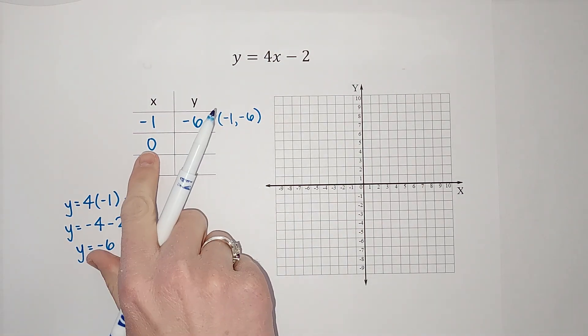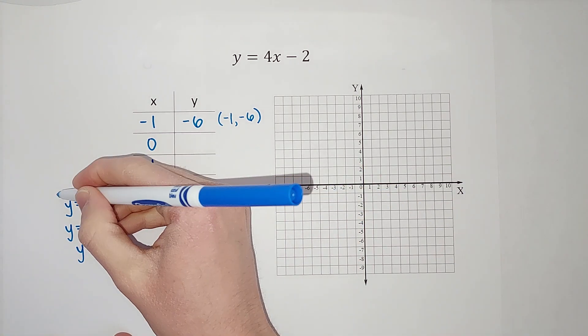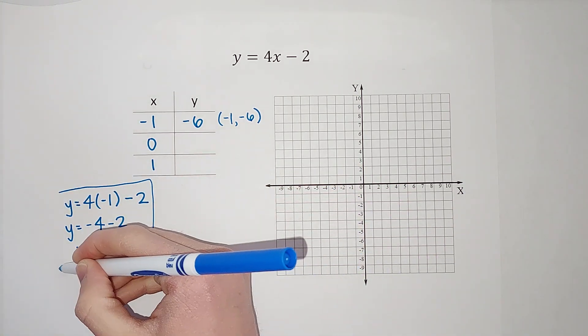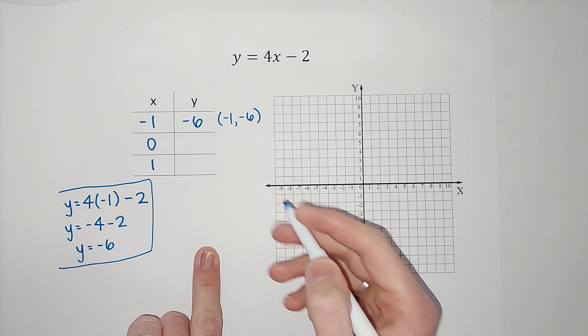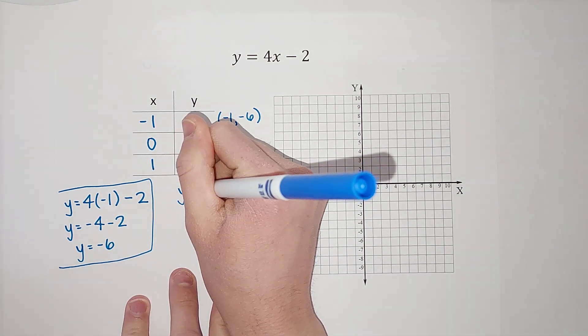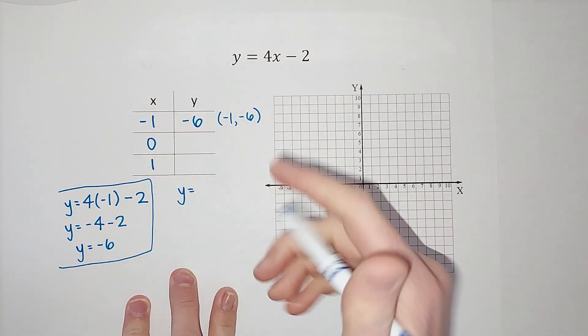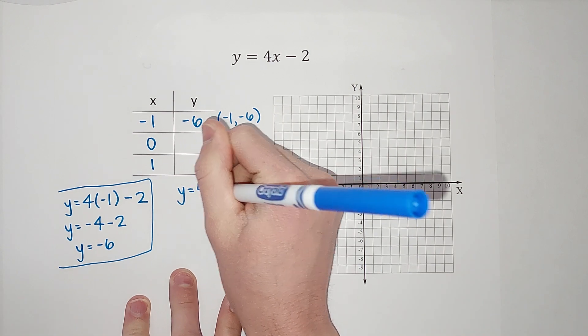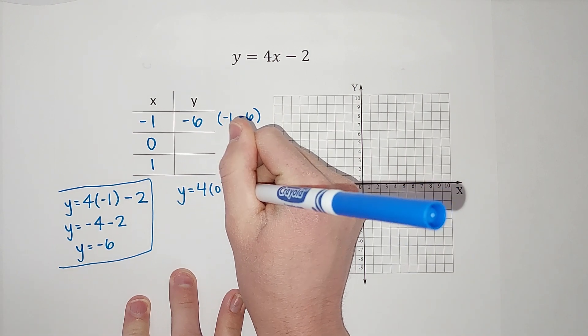All right. Now we are going to plug in 0. I'm going to put this in a little box so it doesn't get in our way. So we want to know what y is when x is 0. These ones are usually pretty easy because 4 times 0 minus 2.